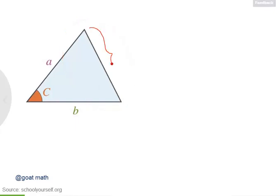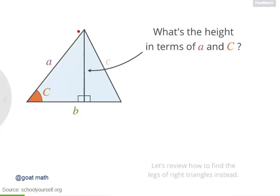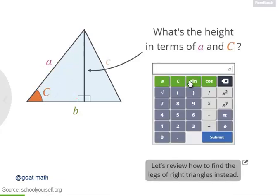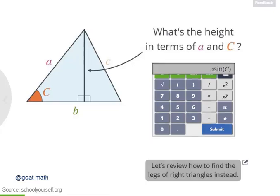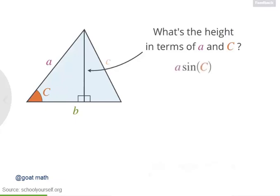Let's specifically try to find this triangle's third side, which we'll call lowercase c. To do that, let's first draw in an altitude from this vertex up here down to this side of the triangle, splitting it into two right triangles on either side. Try using this right triangle to find an expression for this height in terms of side a and angle c. Exactly. This height is opposite angle c in this right triangle, so its length is a times the sine of c.